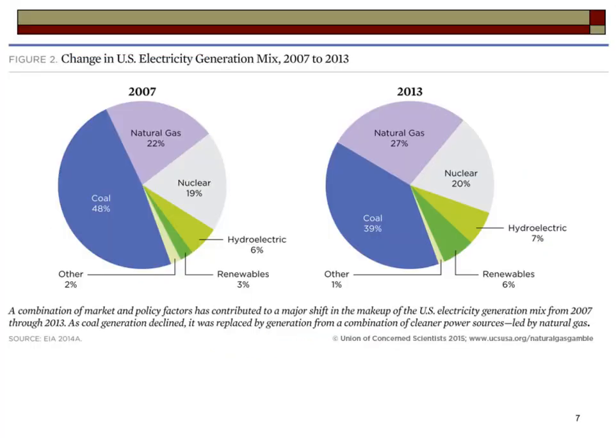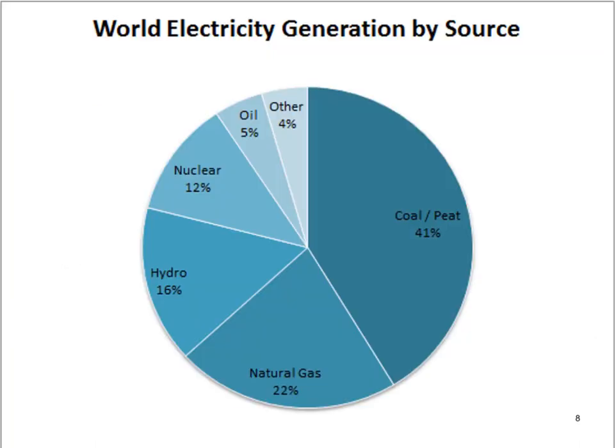The mix of electricity generation in the United States has changed from 2007 to 2013. The contribution of hydroelectric increased from 6% in 2007 to 7% in 2013, while natural gas increased from 22% to 27% in the same period. However, the contribution of hydroelectric to total world generation remains at 16%.